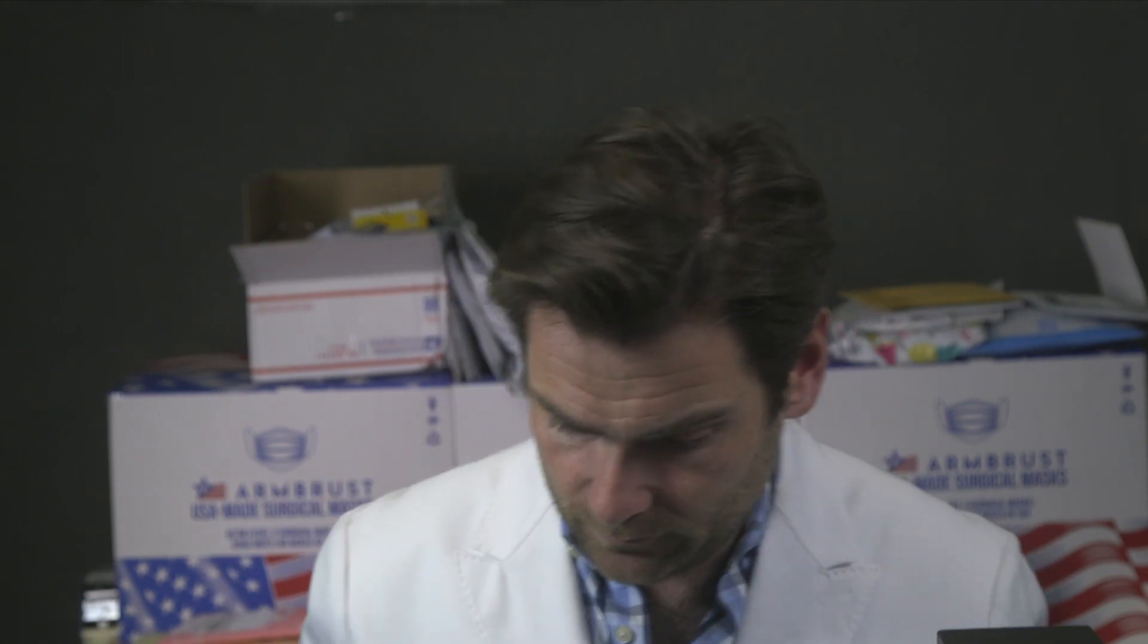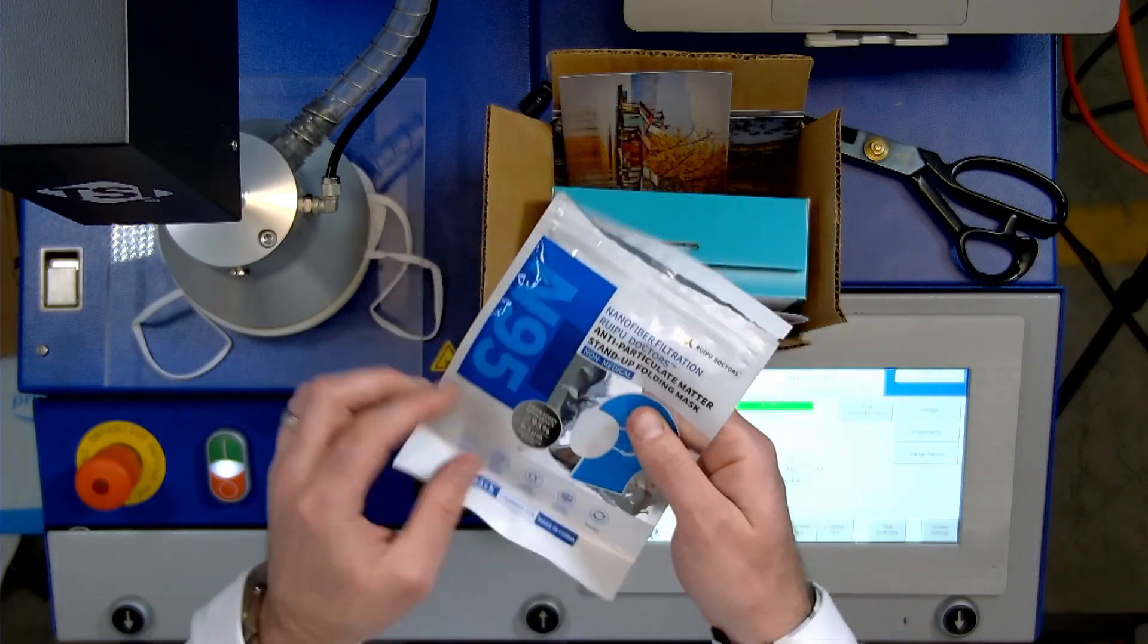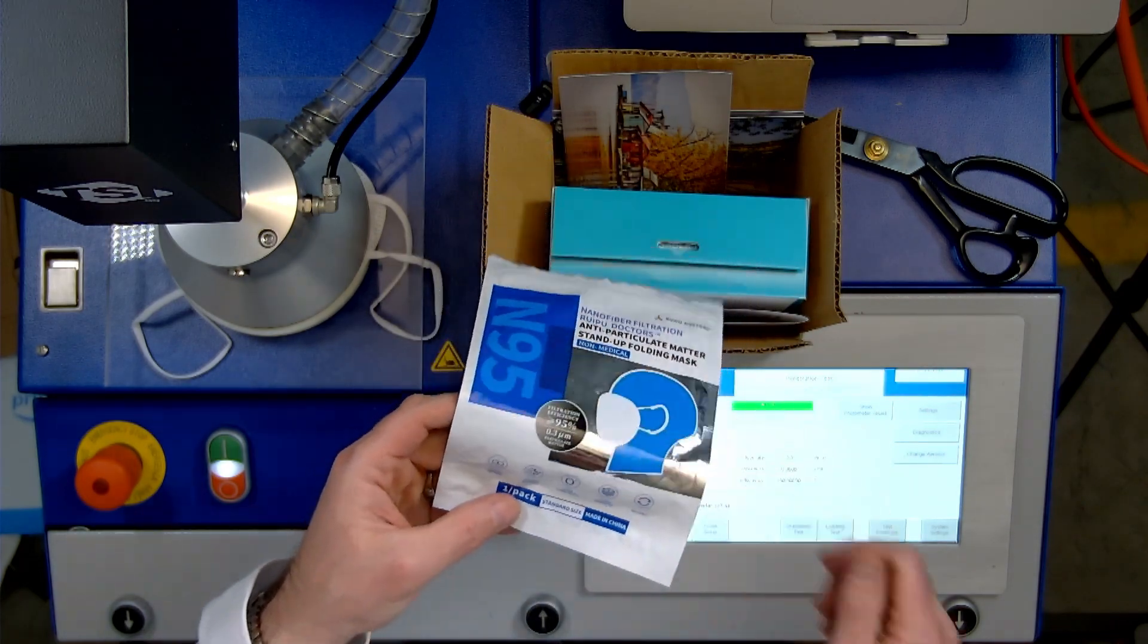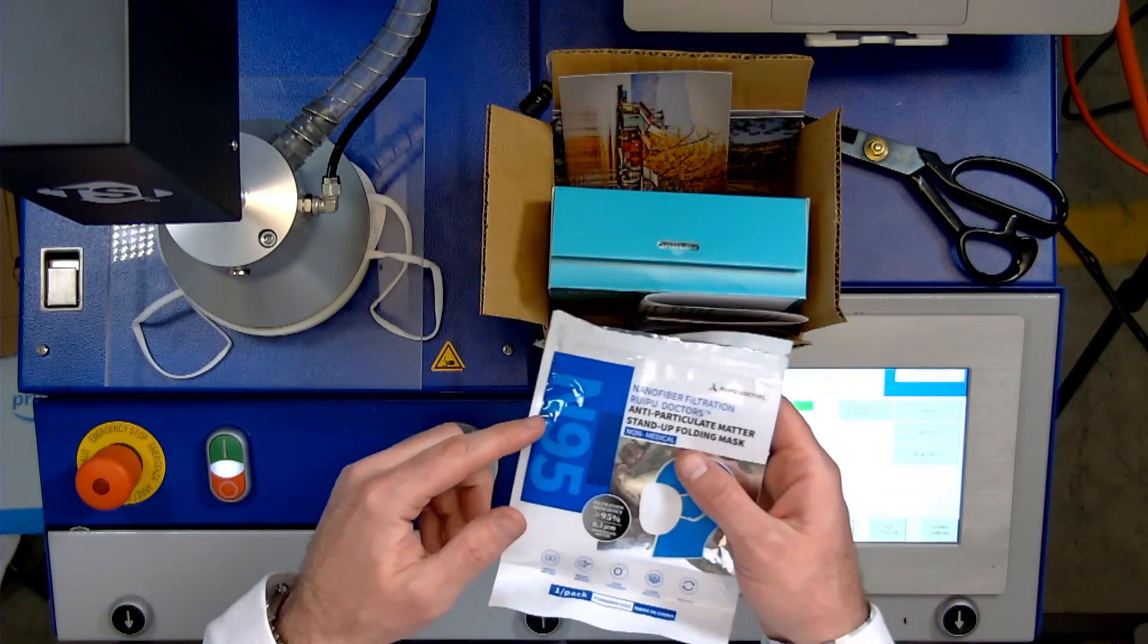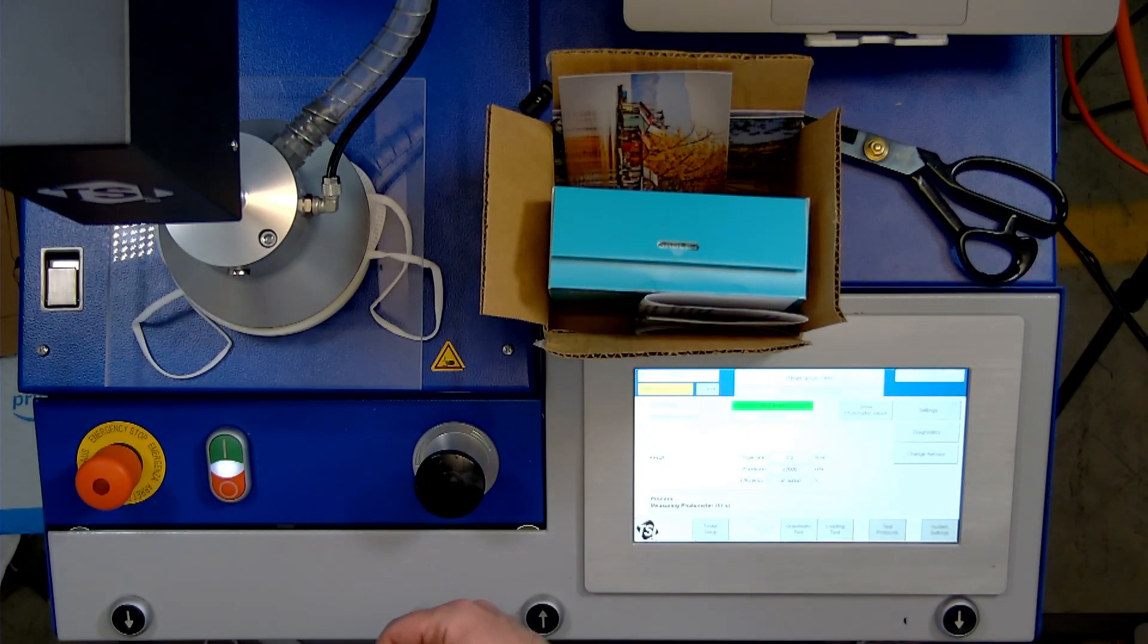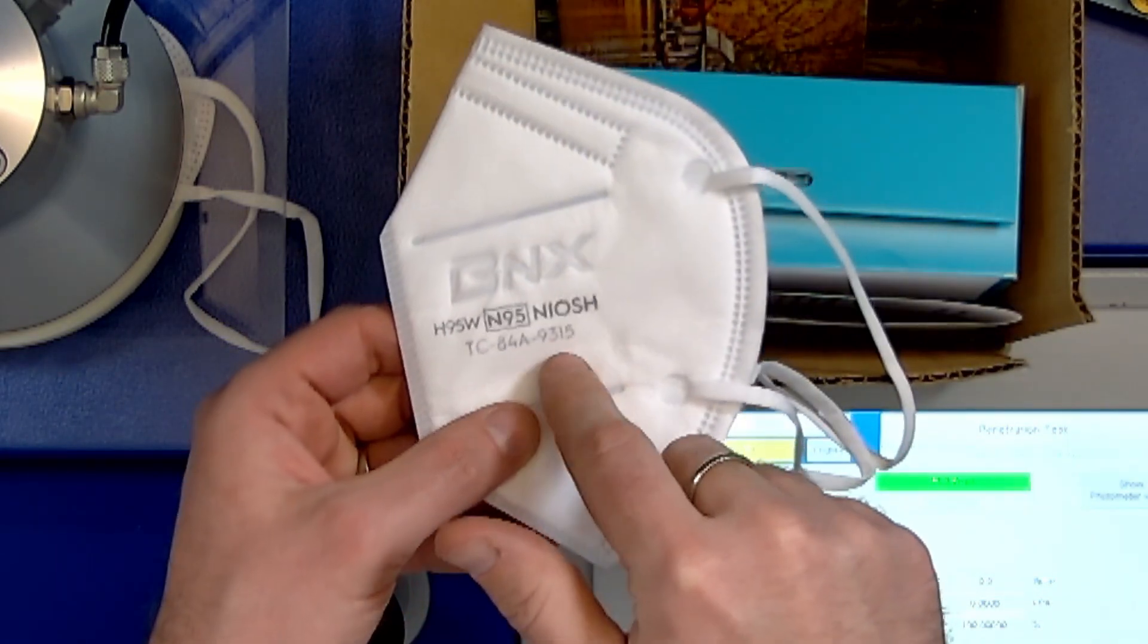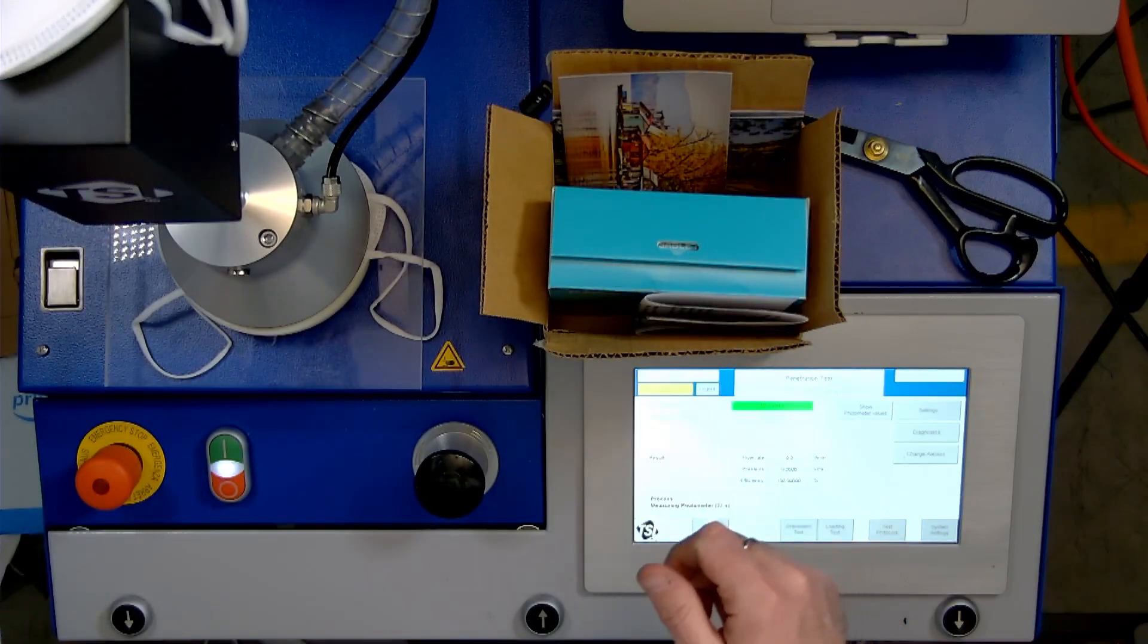So this says it's nanofiber, which is probably not. And it says that it's an N95, which it's not because it doesn't have the correct markings on it. You need to have a TC number like this, TC, on the actual mask if you want it to, if it's an N95.